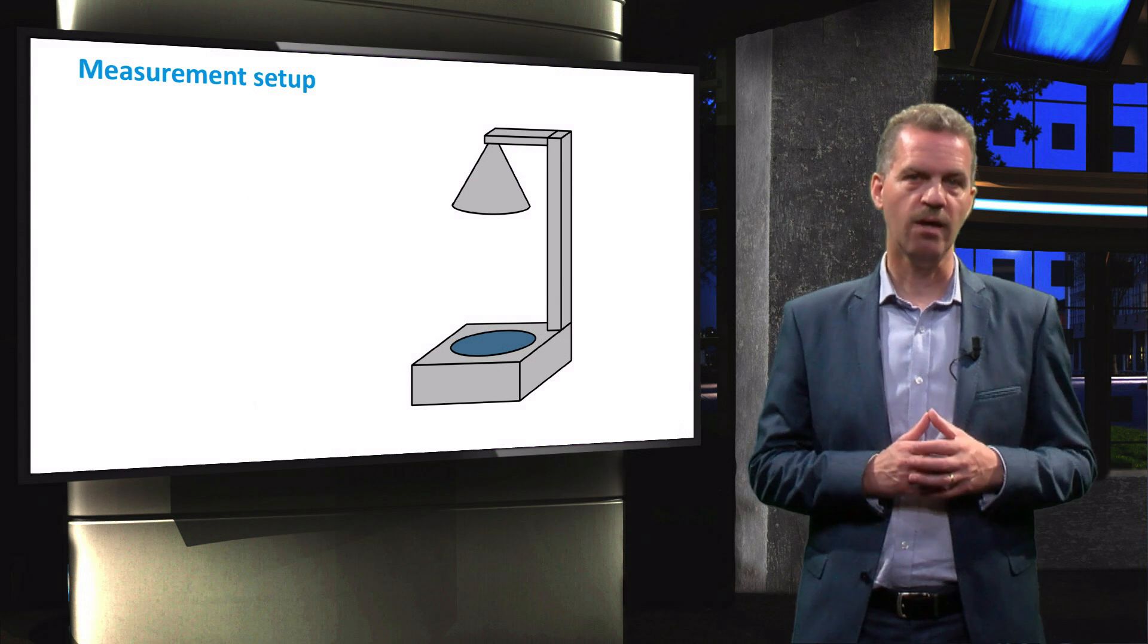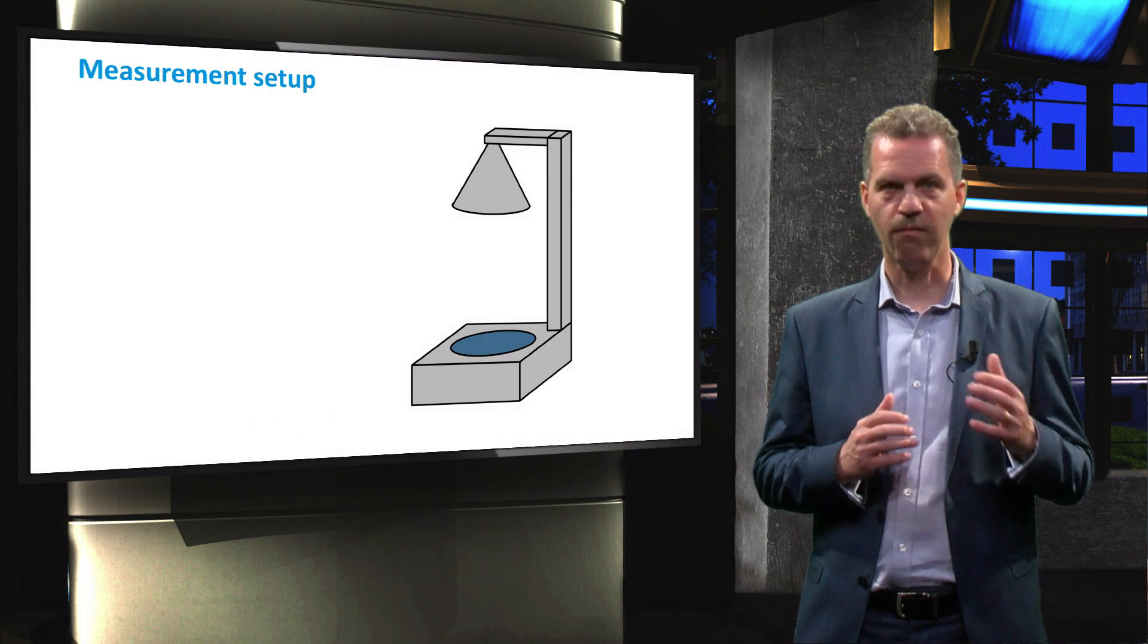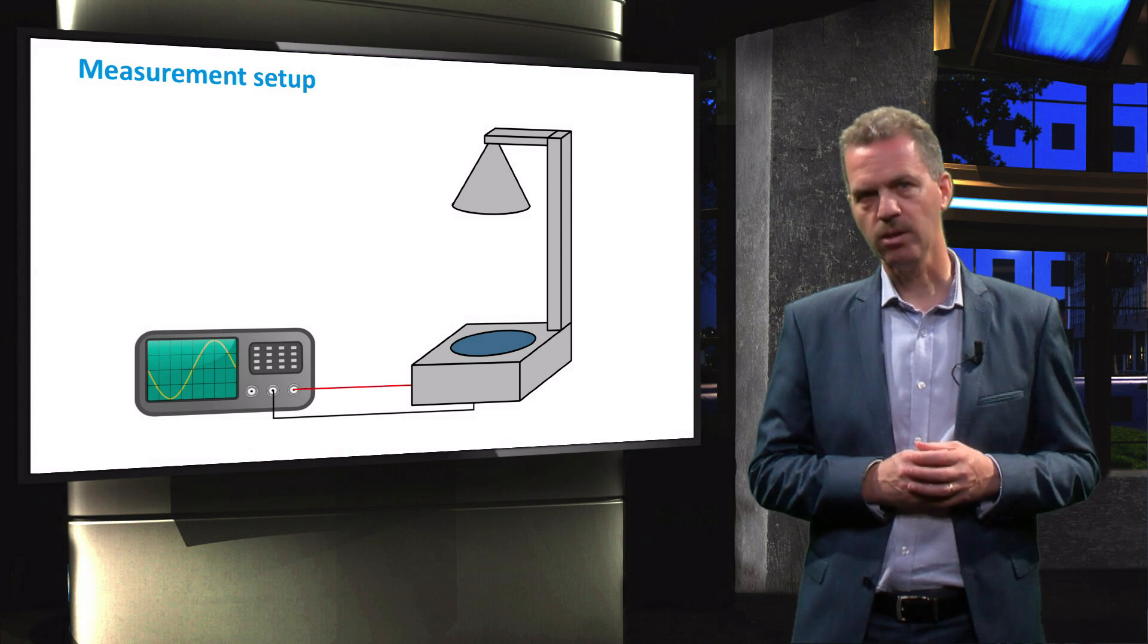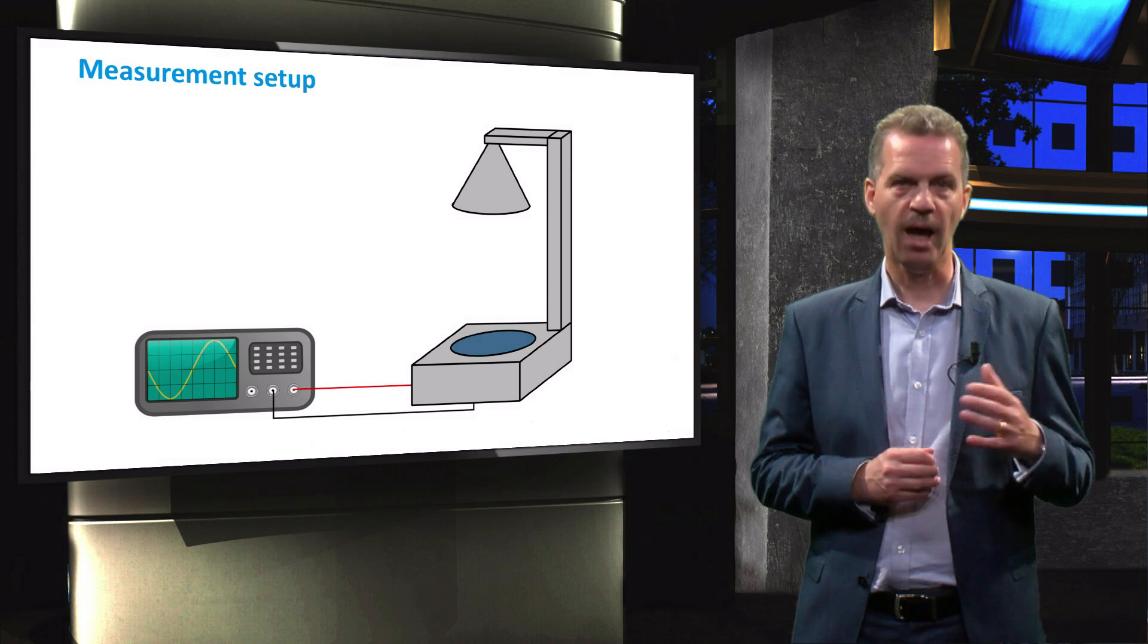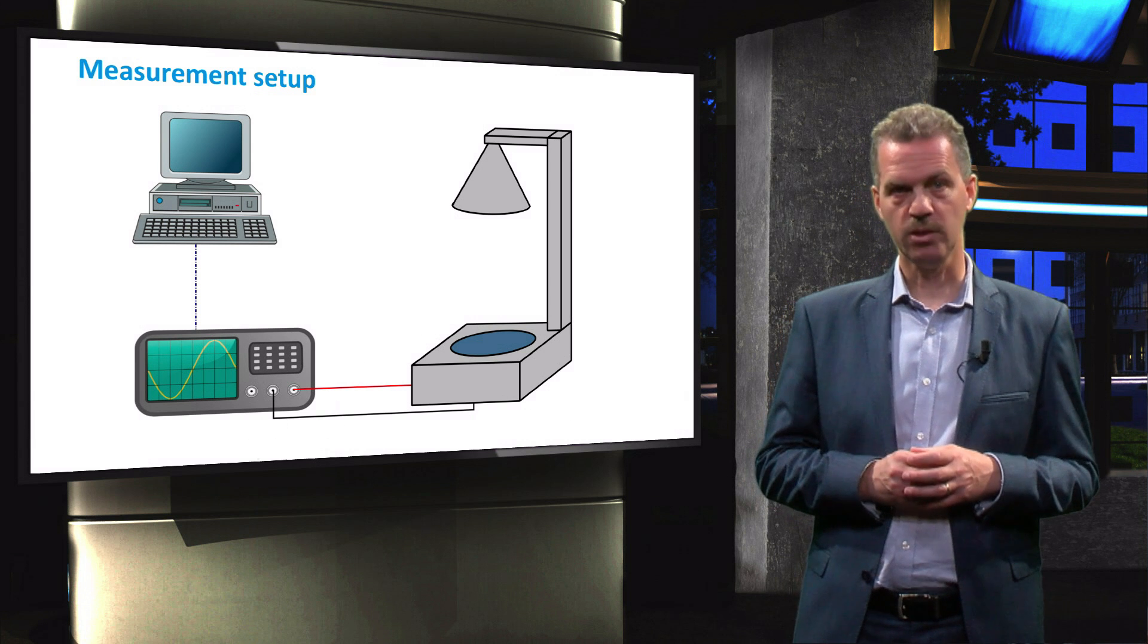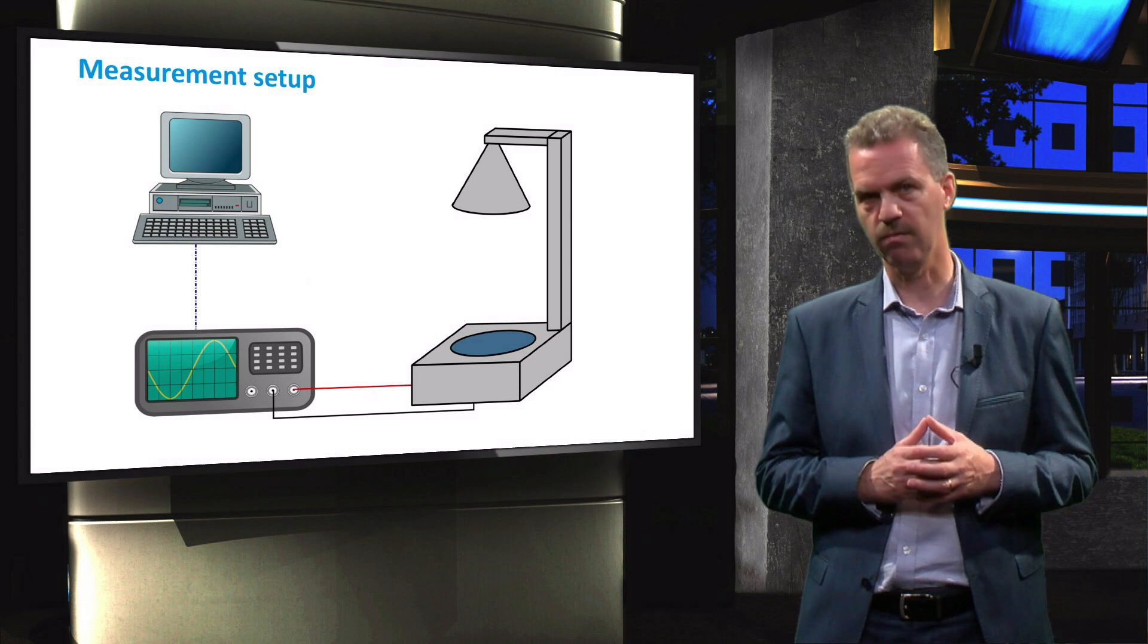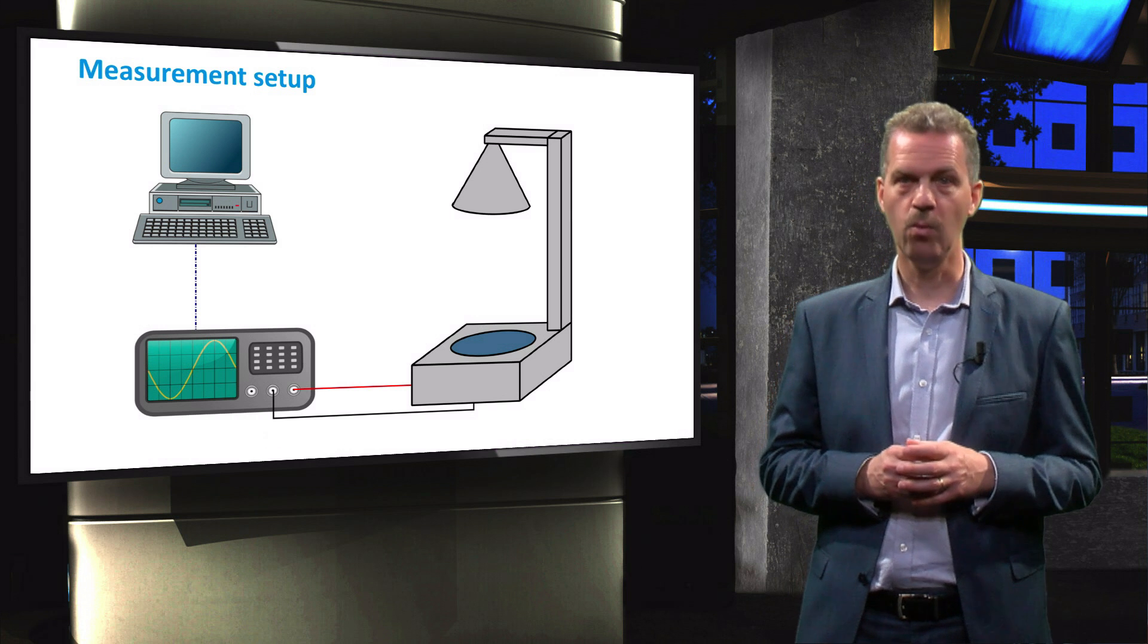A typical lifetime testing setup consists of a stage for the wafer with a flash lamp mounted at about 50 cm above the stage. This stage is connected to an oscilloscope or fast sampling data acquisition card and controlled by a computer. The principle of the measurement is to generate charge carriers in the wafer by a very short and high intensity light flash. As a result the photoconductance of the wafer will increase.